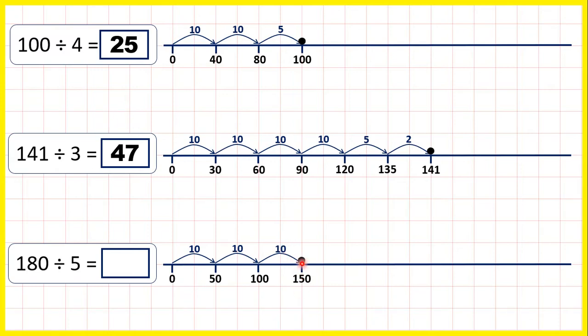Now if we added another 10 times 5, that would take us to 200, which would be too many. So we don't want to jump in 10 times 5. Instead, let's jump in 5 times 5, because 5 lots of 5 is 25. If we add 25 to 150, that takes us to 175.